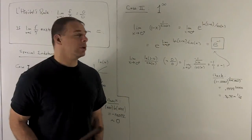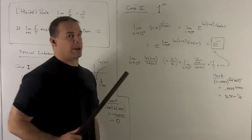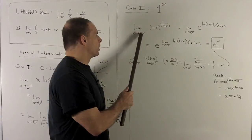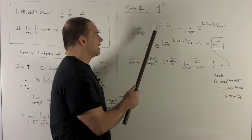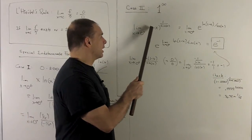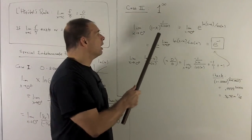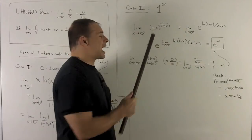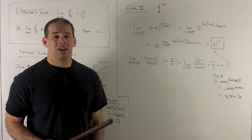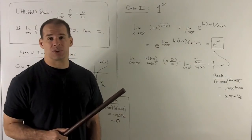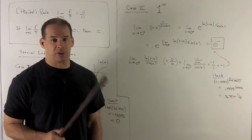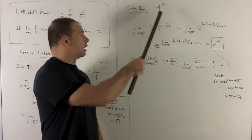Now let's look at the case where we have 1 raised to the infinite power. The example is: limit as x goes to 0 from the right of (1 minus x) raised to the 1 over sin(x) power. Putting 0 in: 1 minus 0 gives 1, and sin(0) is 0, so the exponent is 1 over 0. Coming from the right, sin is positive, so this goes to plus infinity — this is certainly the case we're interested in.